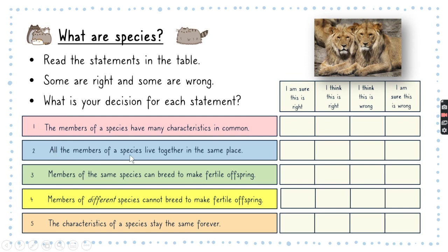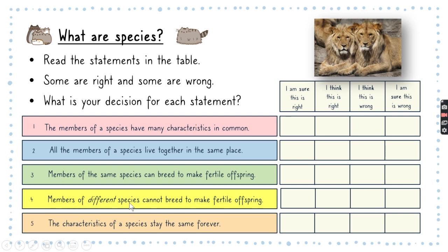Statement two: all members of a species live together in the same place. Do you think this is right, are you sure this is right, do you think it's wrong, or are you super sure that this is wrong? Statement three: members of the same species can breed to make fertile offspring. Statement four: members of different species cannot breed to make fertile offspring.